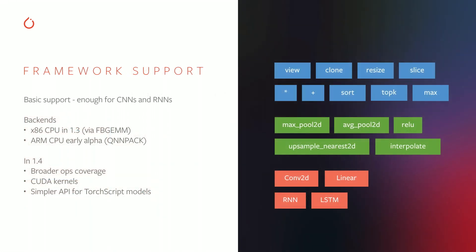With the 1.3 release, we provide support for common operations on quantized tensors and enough coverage on torch.nn layers to implement common CNNs and RNNs. In terms of backends, there are implementations on x86 CPUs powered by FBGEMM, and ARM CPU kernels powered by QNNPACK, a great library written by Marat. In future releases, we'll expand coverage of both operations and layers, as well as extending backend support — most importantly, adding CUDA — and simplifying the workflow for quantizing models already in TorchScript.